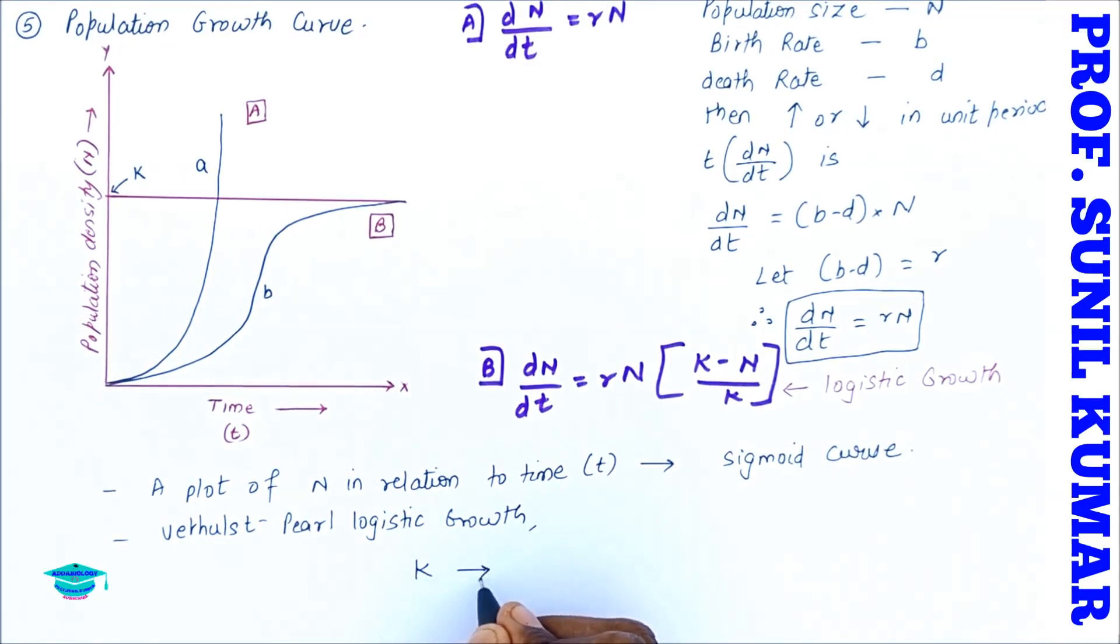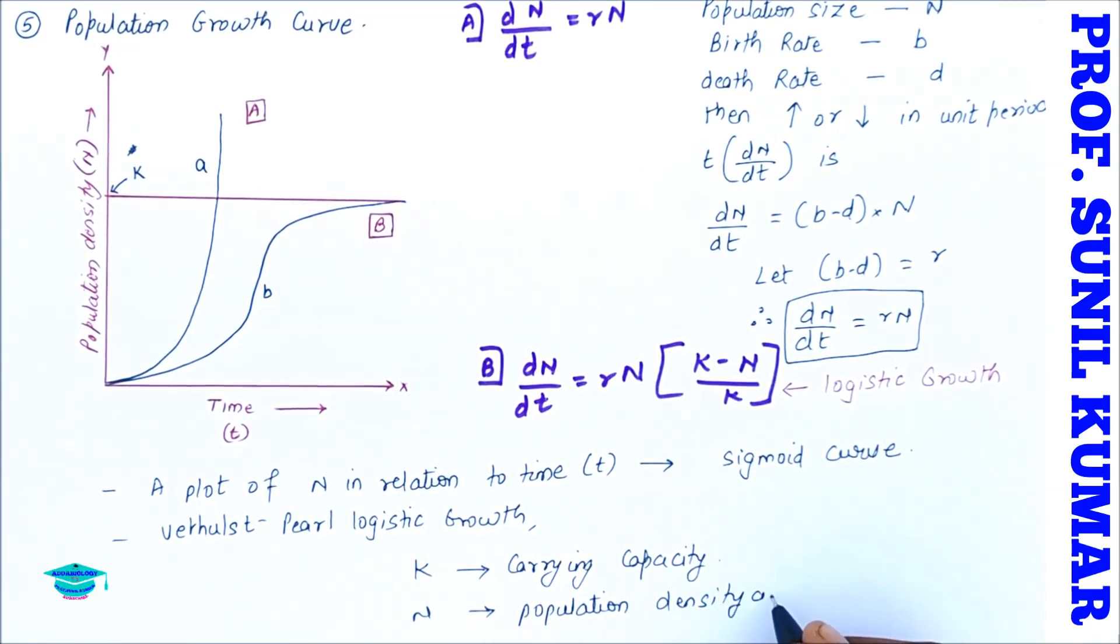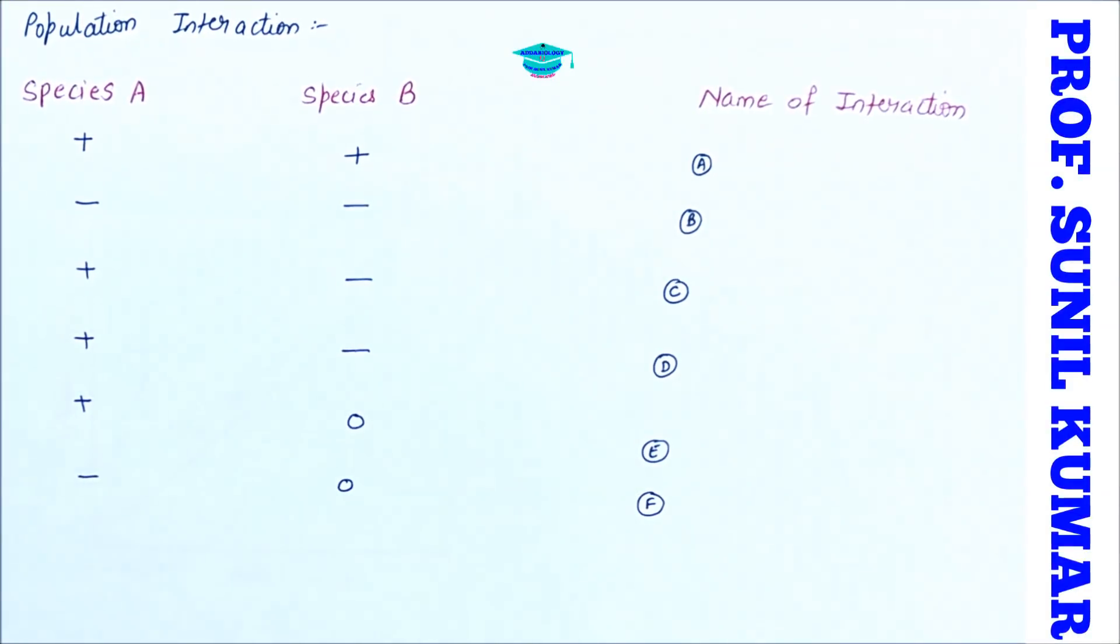Verhulst and Raymond Pearl are the two scientists who came up with the concept of logistic growth. We need to understand again one more thing: K is the carrying capacity and N is the population density at time t. So this is how by looking at the graph you can calculate the increase or decrease in the population at a particular time.